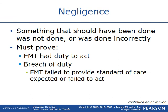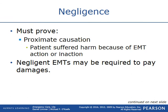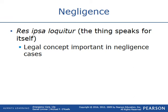Negligence is something that should have been done but was not done, or was done incorrectly. To prove negligence, the courts must find: first, that the EMT had a duty to act; second, that there was a breach of duty — the EMT failed to provide the expected standard of care or failed to act altogether; and third, proximate causation — that the patient suffered harm because of the EMT's action or inaction. Negligent EMTs may also be required to pay damages. The legal concept res ipsa loquitur — the thing that speaks for itself — is important in negligence cases.